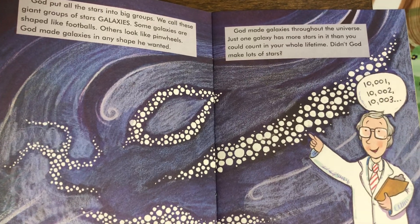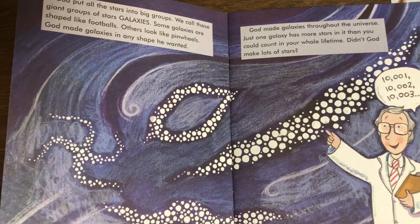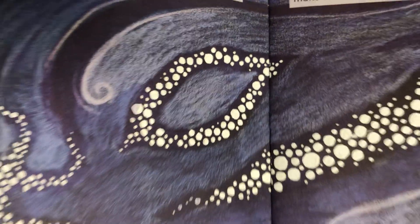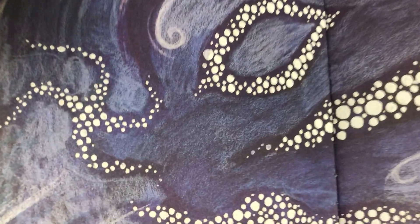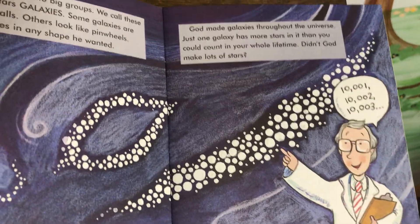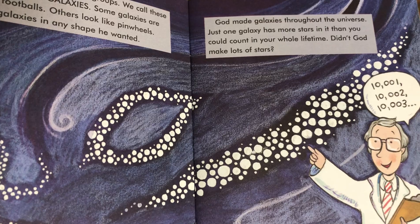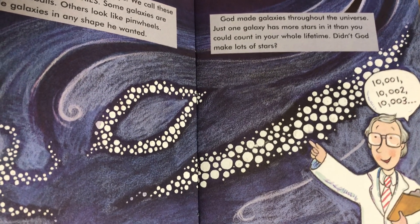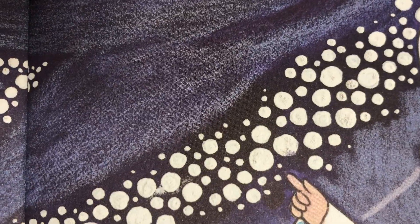God put all the stars into big groups. We call these giant groups of stars galaxies. Some galaxies are shaped like footballs; others look like pinwheels. God made them in any shape he wanted. God made galaxies throughout the universe. Just one galaxy has more stars in it than you could count in your whole lifetime. Didn't God make lots and lots of stars!